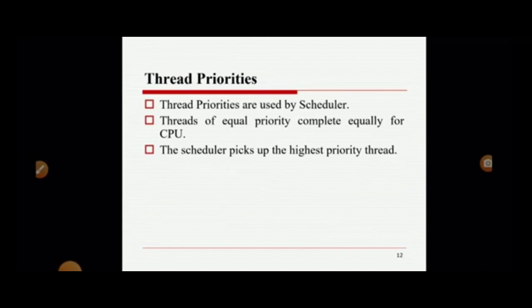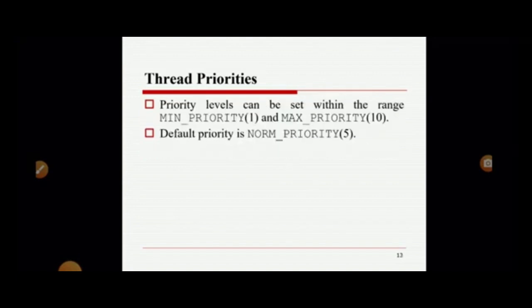Next, we are going to discuss about thread priority. Thread priorities are used in the scheduler — the scheduler schedules processes to the CPU. Threads of equal priority compete equally for CPU time. We can set priority levels within a range: MIN_PRIORITY is 1, MAX_PRIORITY is 10, and the default NORM_PRIORITY is 5. The scheduler normally picks up the highest priority thread.